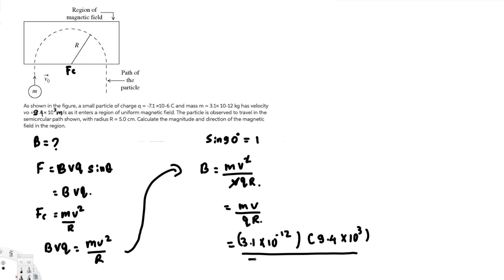So we put 7.1 × 10^-6, and the radius is 5 centimeters, which is 5 × 10^-2 meters.